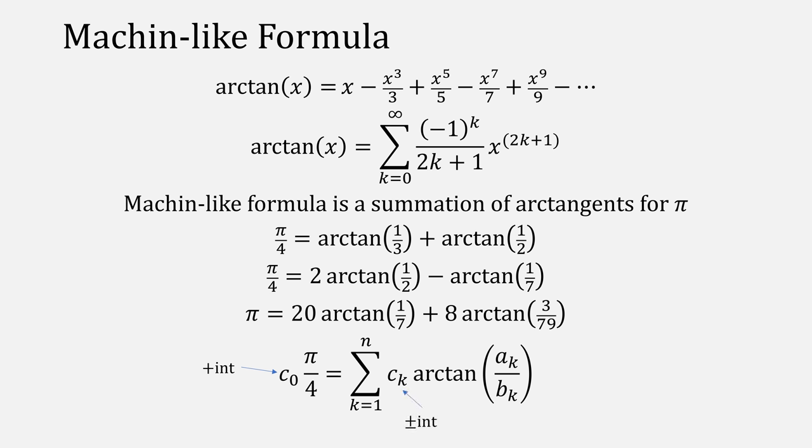The coefficient c in front is some positive integer, usually 4. Our other values for c are positive or negative integers, for example, 20, 8, minus 1. They're the coefficients in front of our arctangents. Finally, our fraction a over b are some ratio of positive integers, less than 1, usually showing that none of these values are 0.